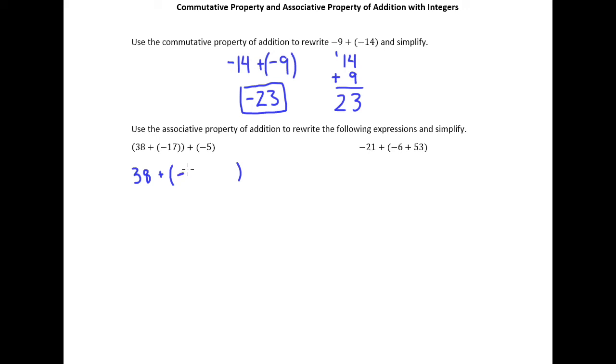So the question is whether I need to put a set of parentheses around -17. And the answer is no. The parentheses that are indicating do -17 plus -5 first are enough to kind of protect this negative from this plus sign. So I can actually drop the parentheses that are around -17.